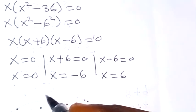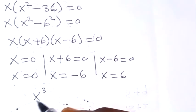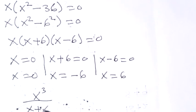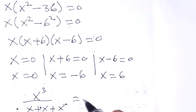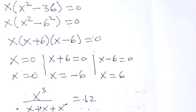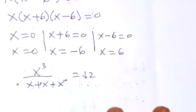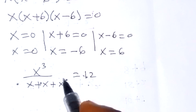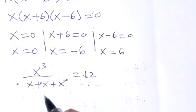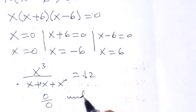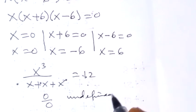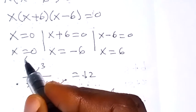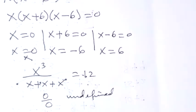Now we can check our values. We have x raised to power 3 over x plus x plus x equals to 12. For x equals to 0, when we put 0 in, that's 0 raised to power 3 over 0 plus 0 plus 0, which is 0 over 0 — this is undefined. So x equals to 0 is not a solution.